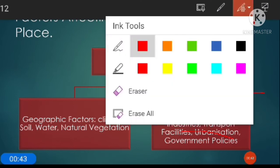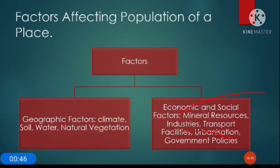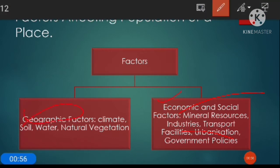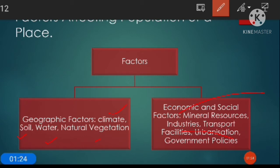We also discussed the important factors that control population distribution throughout the world. These factors divide into two major heads: geographical factors and economic factors. Geographical factors include climate, soil, natural vegetation, and water. Economic factors include mineral resources, presence of industries, transport facilities, urbanization, and government policies.